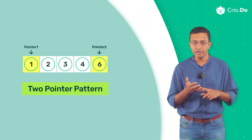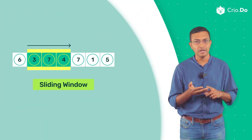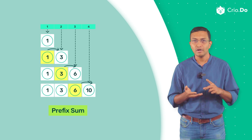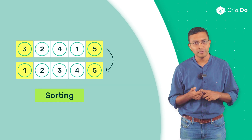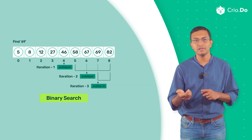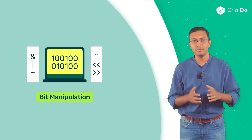Then we move on to learning one pattern at a time. We cover array and string related patterns first, like two pointers, sliding window, prefix sum, sorting, binary search, and bit manipulation.